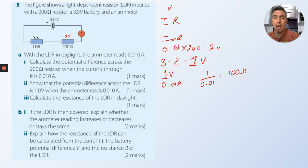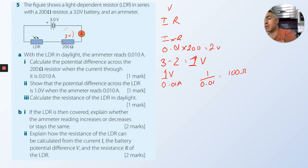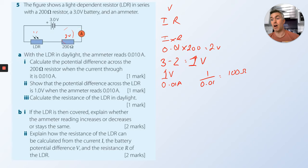That makes sense because the LDR is half the resistance of the fixed resistor. The fixed resistor is twice as difficult for electrons to get through, so it uses twice the energy — 2 volts — whereas the LDR only takes 1 volt. Double the resistance means double the voltage. That makes sense.